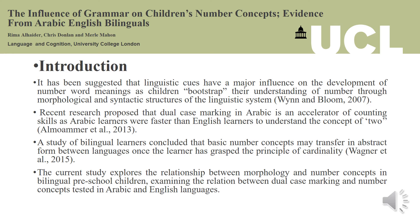Research has shown that the dual case in the Arabic language enhances number concepts, particularly for understanding of number word 'two'. Studies of bilingual learners suggest that at the early stages, number word learning takes place independently in each language. Young bilingual children's responses to the give-a-number task are specific to the language they are using. It has been proposed that transfer of number concepts between languages may occur in bilingual learners, but only after they have grasped the cardinality principle. The current study investigates the relation between language development and number knowledge by measuring language skills and number knowledge of English-Arabic bilinguals in both languages, as well as dual case comprehension in Arabic.